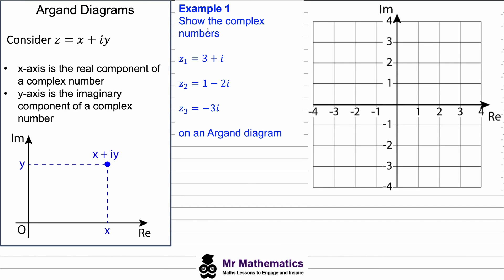In this video we're going to look at plotting complex numbers on an Argand diagram. If we consider z, our complex number made up of a real part x and an imaginary part y, then the x-axis is the real component of the complex number — this is where we plot along the real axis — and the y-axis is the imaginary component of the complex number, which is where we plot y.